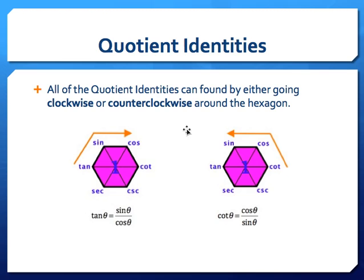The example on the right shows going counterclockwise around the hexagon. Again, I may start anywhere along the hexagon. I can go cotangent is equal to cosine over sine. So all quotient identities can be determined by going clockwise or counterclockwise around the hexagon.